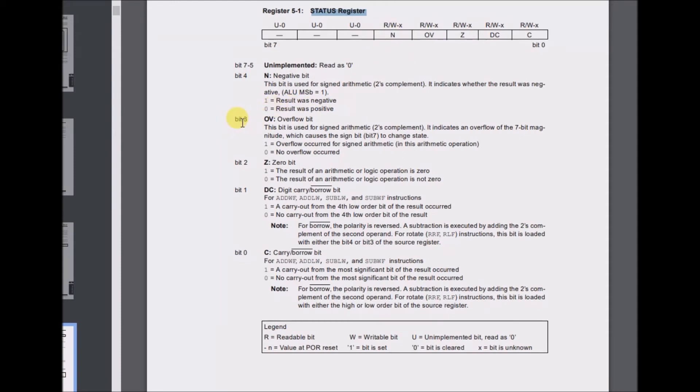Bit 3, overflow bit. This bit is used for signed arithmetic, two's complement. It indicates an overflow of the 7-bit magnitude, which causes the sign bit, bit 7, to change state. 1 equals overflow occurred for signed arithmetic operation. 0 equals no overflow occurred.